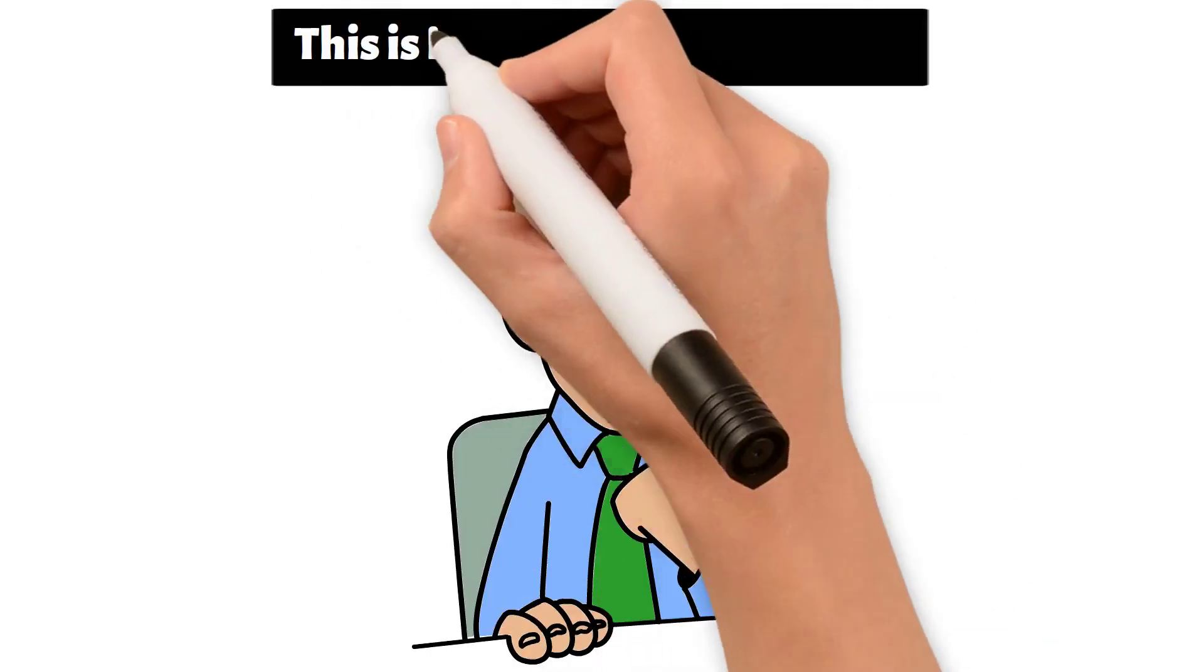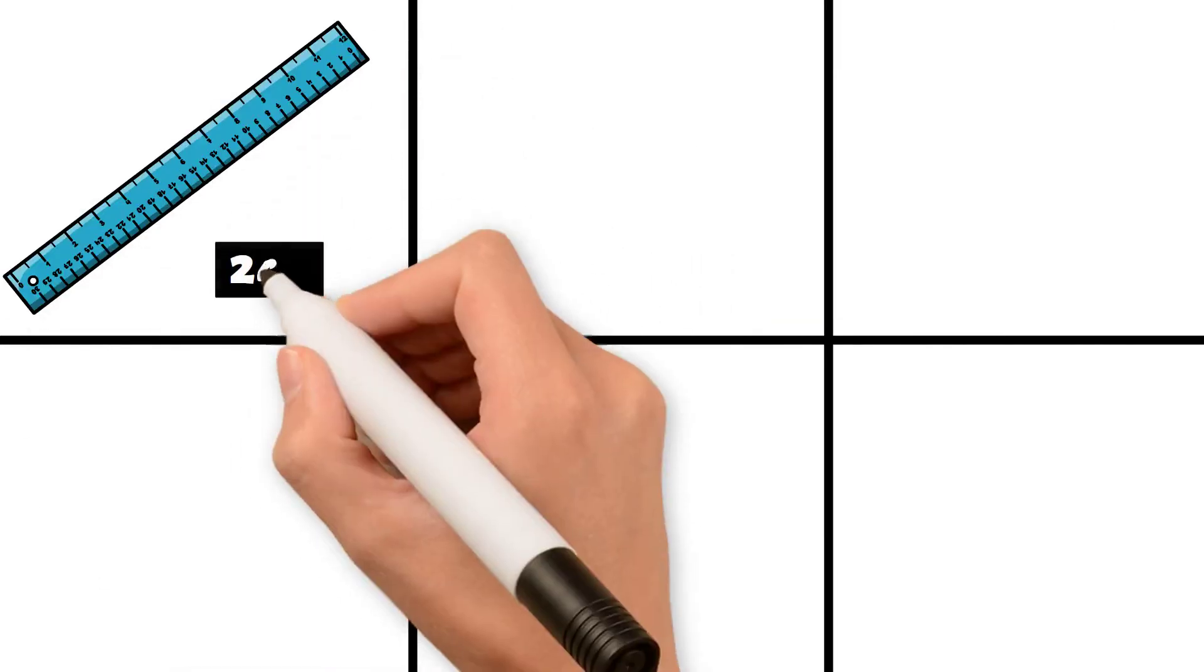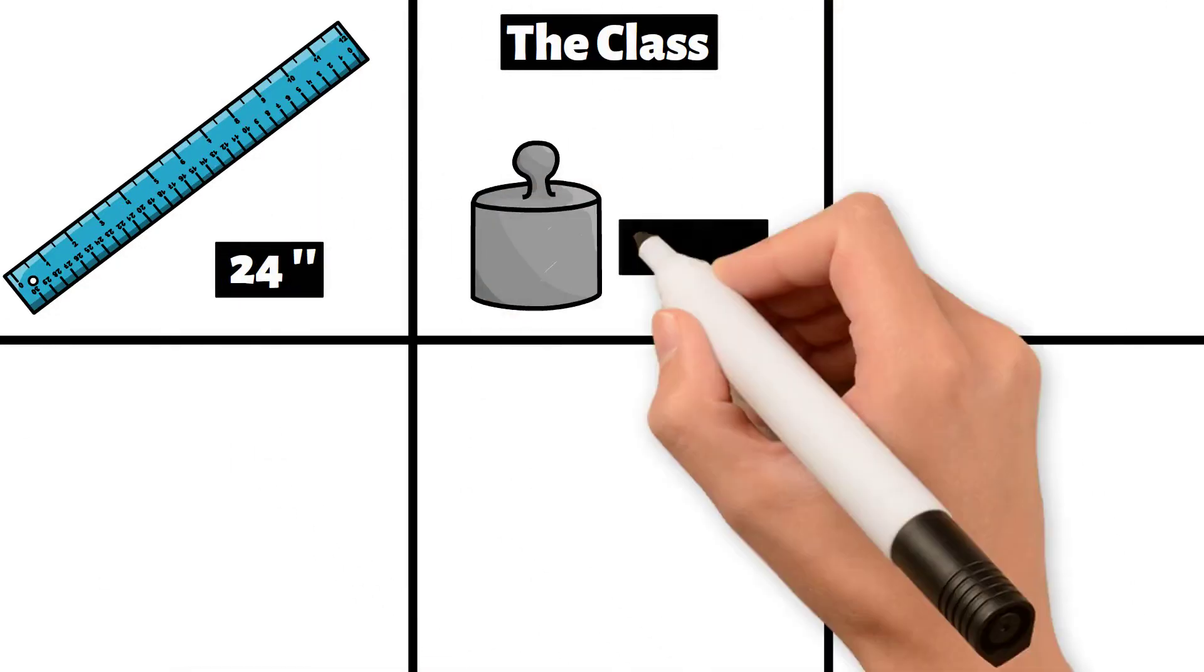For those new to the industry, this is how we call out a flange. First, we state the size, say 24 inch. Then the class, say 150 pound.